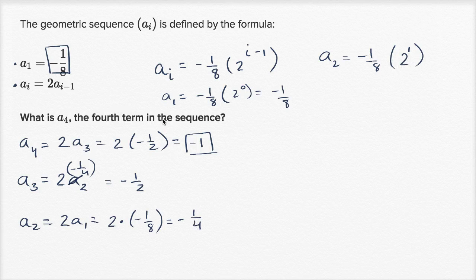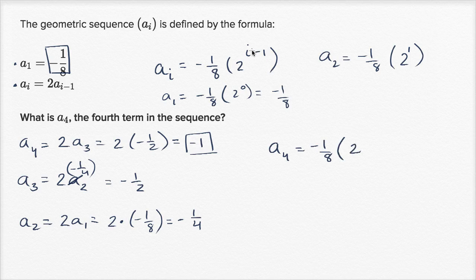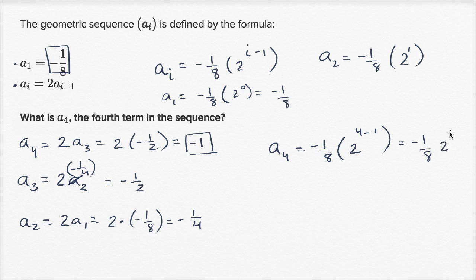So if we want to find the fourth term in the sequence, using this explicit formula, a₄ equals negative one eighth times two to the four minus one — two to the third power. That equals negative one eighth times eight, which equals negative one.